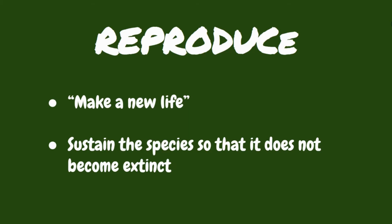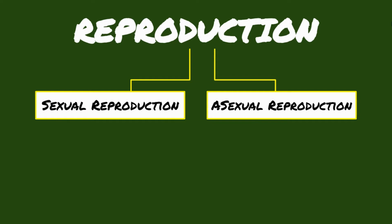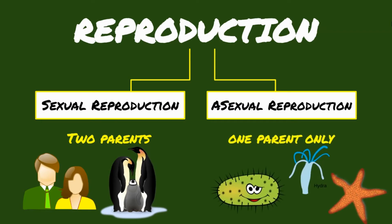Let's talk more about the differences between sexual and asexual reproduction. Organisms reproduce either sexually or asexually. The main difference between sexual and asexual reproduction is the number of parents. Sexual reproduction means combining genetic material from two parents, while asexual reproduction produces offspring genetically identical to one parent only.